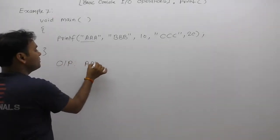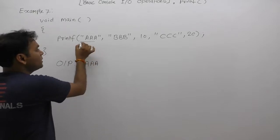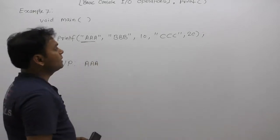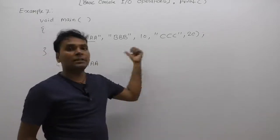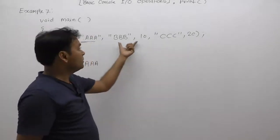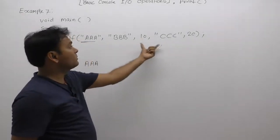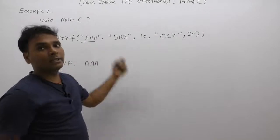It can print only the value of first argument. Remaining arguments don't print by this printf function because there is no corresponding format specifier available inside that printf.